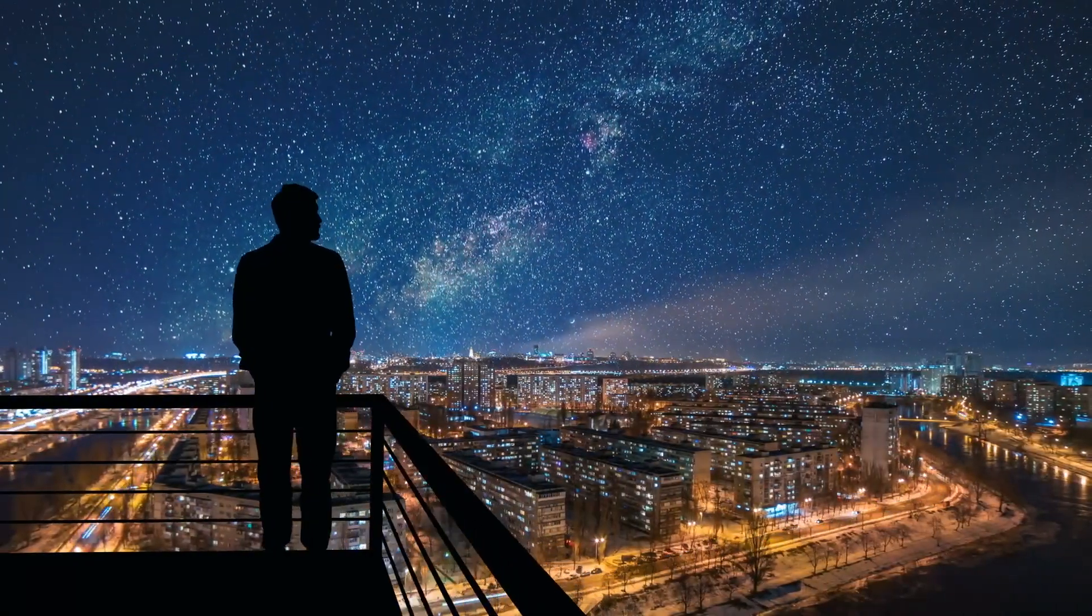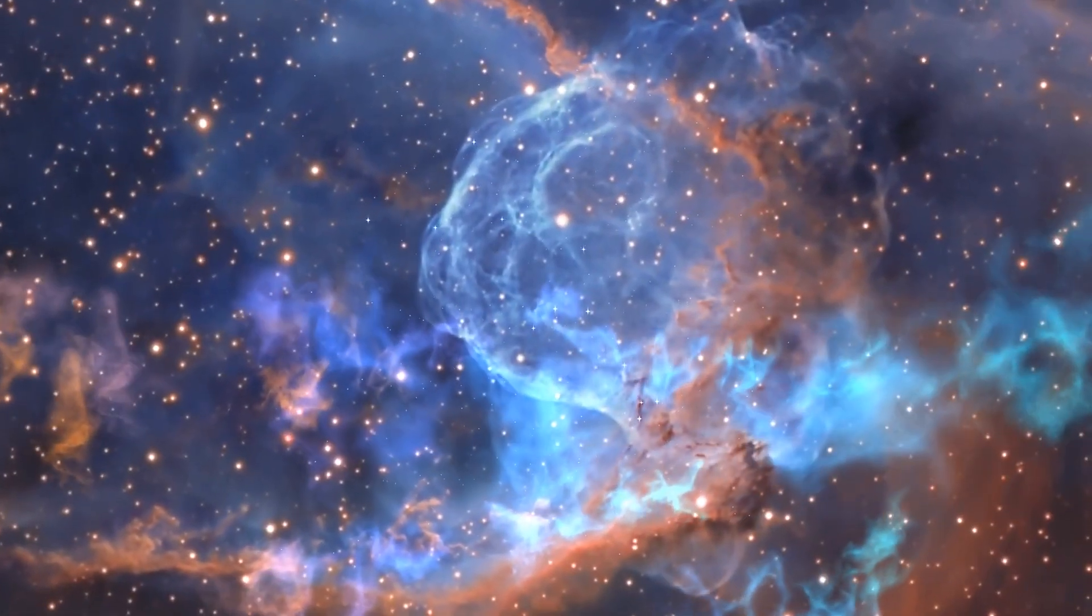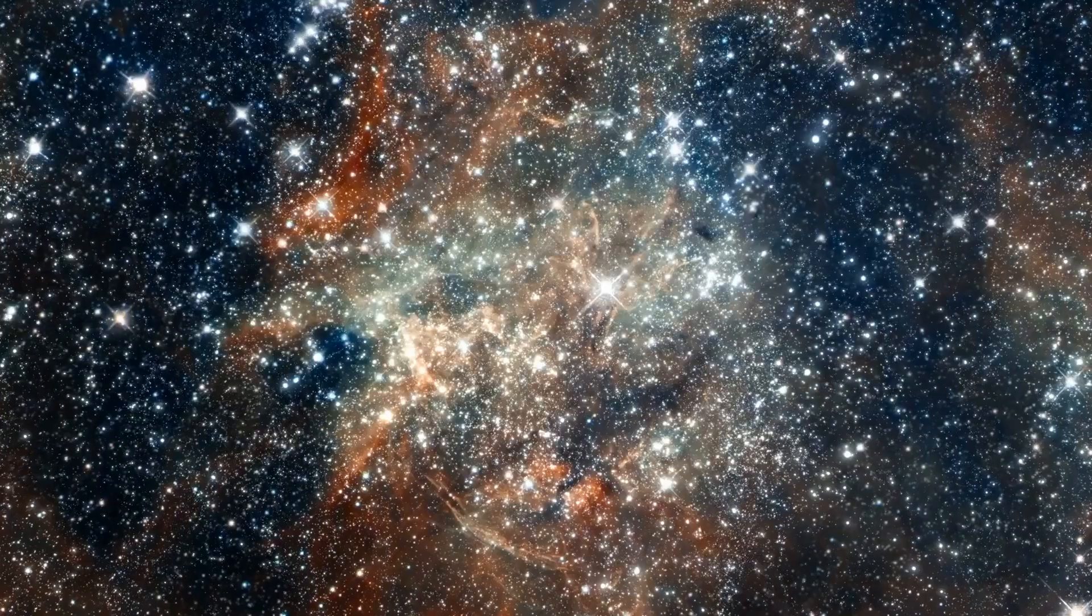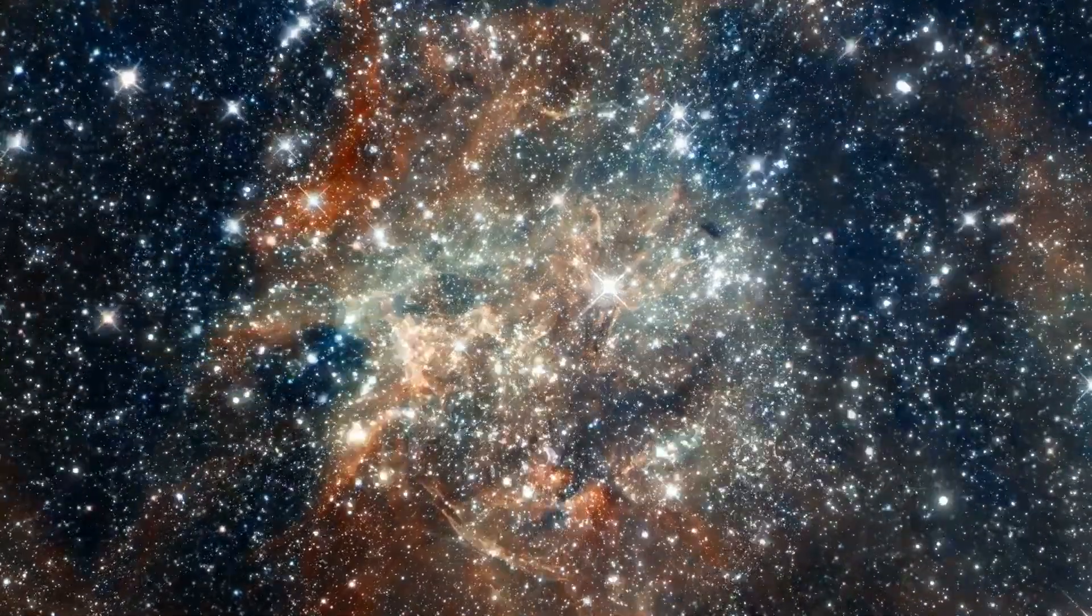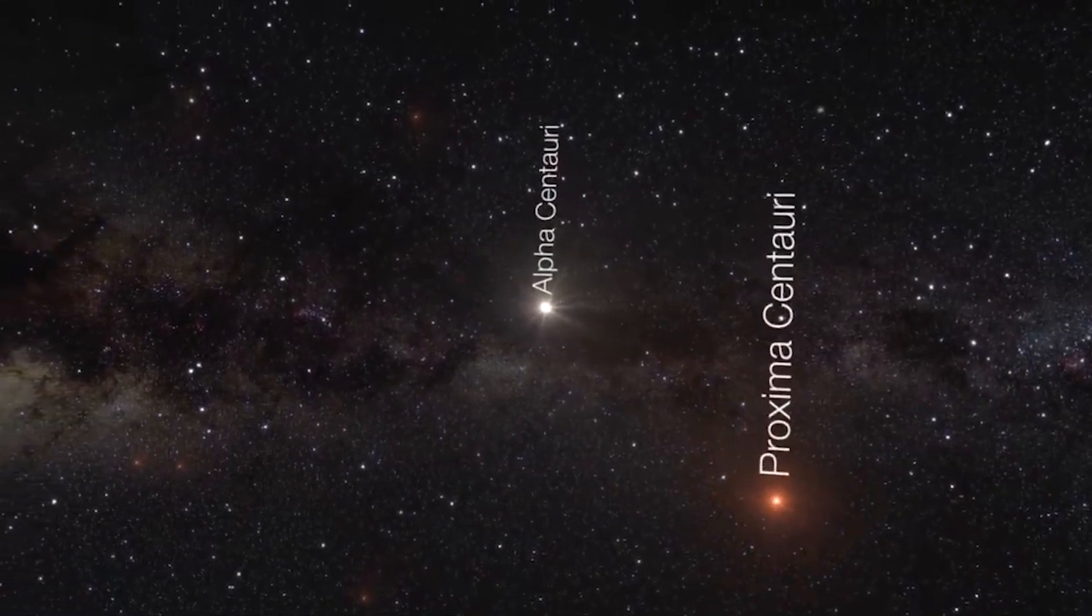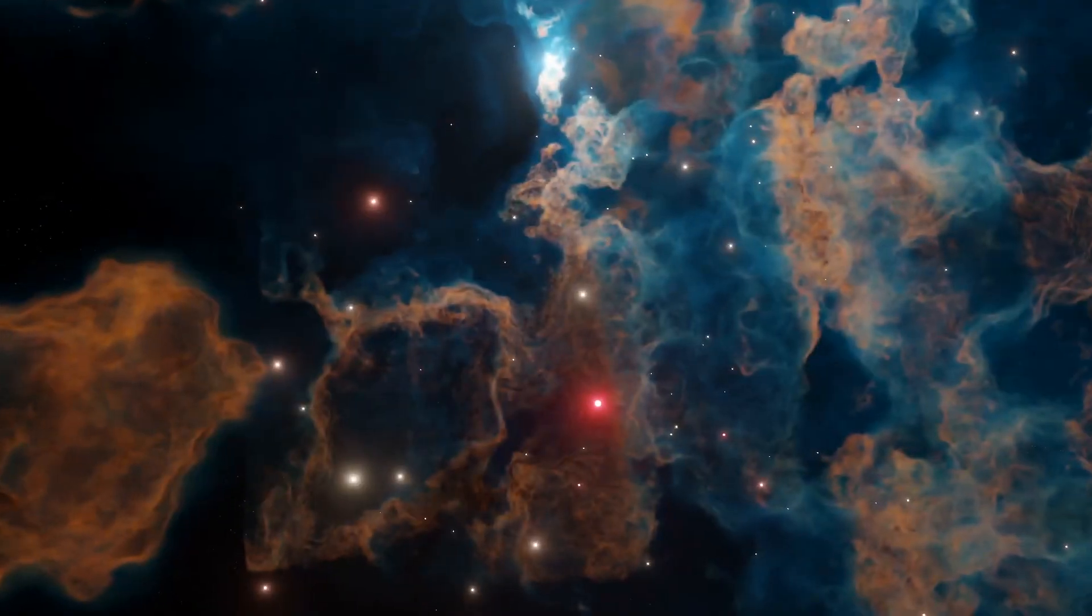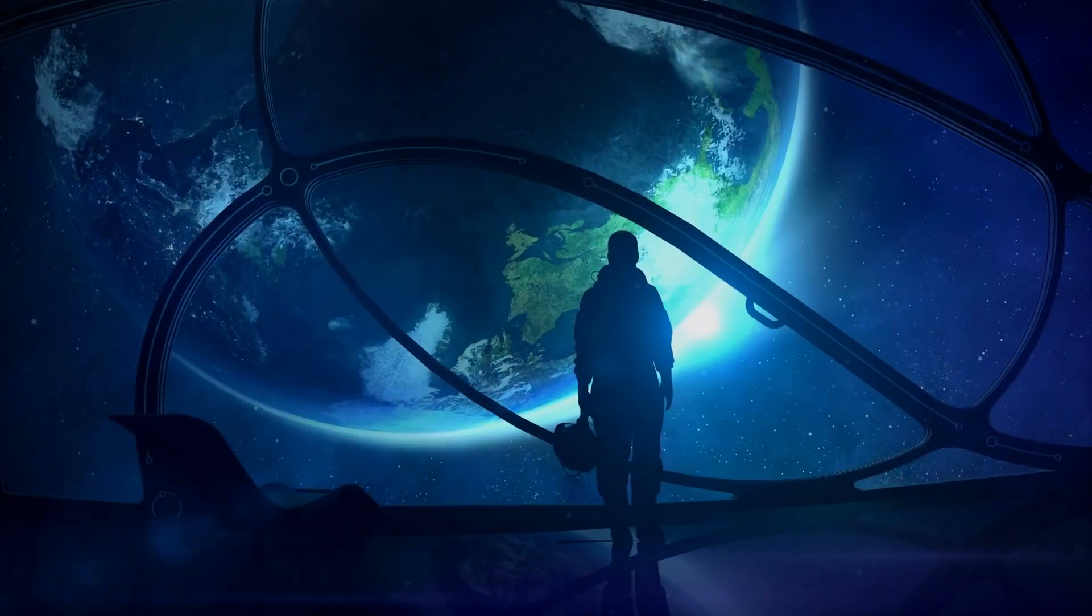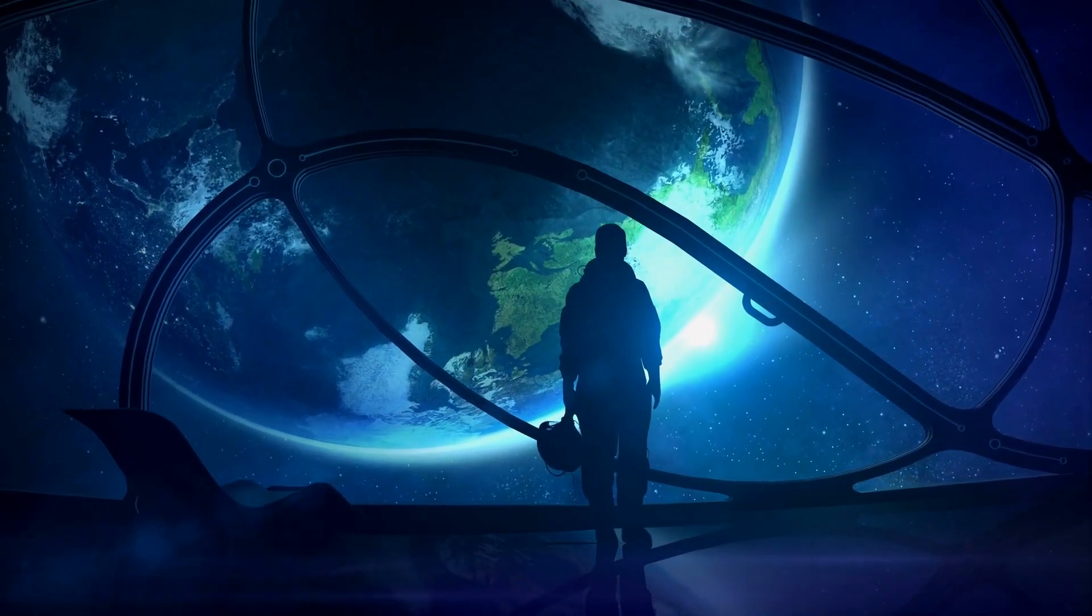Our universe is vast and still expanding according to almost all major theories. At the moment it is way too big for humans to traverse from one end to another. The universe is so massive that it takes more than four light years to travel to Proxima Centauri, the nearest star to Earth. Four light years means that even with the best propulsion systems on our planet, it would take thousands of years for a human to reach there.